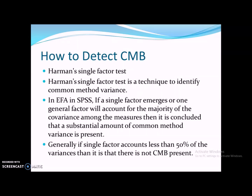In exploratory factor analysis, we normally choose an unrotated solution to detect the total number of factors explaining the majority of data variance. But for common method bias, according to Harman's single factor test, we intentionally select a single factor. If that single factor represents the majority of variance in your data, then there is a substantial amount of common method bias. Generally, if the single factor accounts for less than 50% of the variance, it is believed there is no common method bias present.